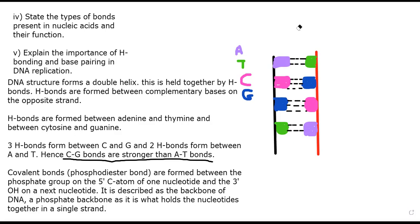This DNA strand here is a very simplified version, and that is all you will need. We use two lines to represent the two strands of DNA, with bases sticking off each strand and hydrogen bonds between them. You have to label your strands five prime and three prime. At one end you have five prime and at the other end is three prime.